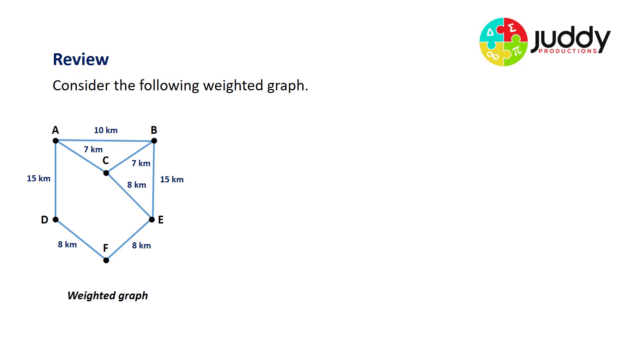Let's do a quick review on minimum spanning trees. First of all, you have in front of you a weighted graph. This weighted graph shows six vertices, eight edges, and there's numbers associated with each edge. Hence, it's called a weighted graph.